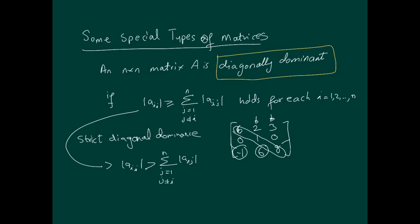And that is the same idea, only AII is strictly greater than all the remaining entries, the sum of the absolute values of each of the rows. That's called strict diagonally dominant. That's a strictly diagonally dominant matrix.